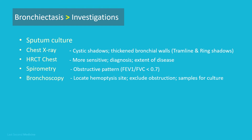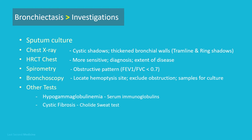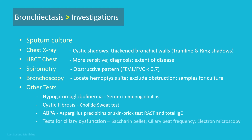Bronchoscopy is performed to locate the site of haemoptysis, exclude obstruction, and obtain samples for culture. Other tests include serum immunoglobulin levels, a chloride sweat test for cystic fibrosis, and for allergic bronchopulmonary aspergillosis: Aspergillus precipitins, skin prick test, or total IgE testing. A screening test for ciliary dysfunction can be performed by measuring the time taken for a small pellet of saccharine placed in the anterior chamber of the nose to reach the pharynx — this should not exceed 20 minutes but is greatly prolonged in ciliary dysfunction. Ciliary beat frequency may be assessed from nasal biopsies, and structural abnormalities of cilia can be detected by electron microscopy.